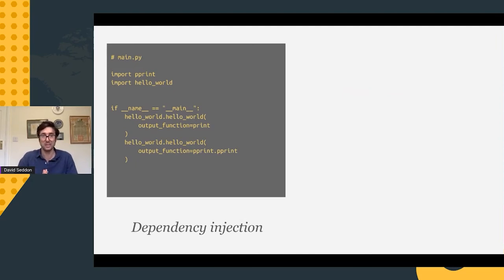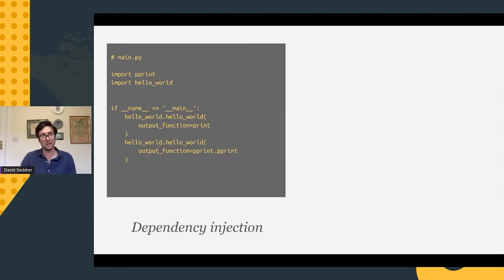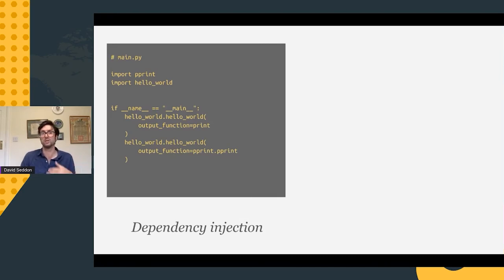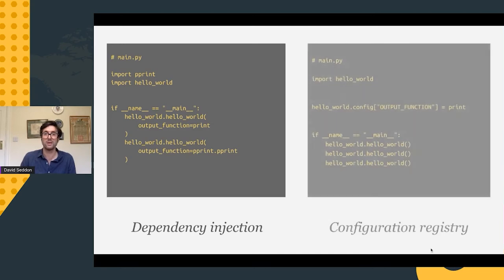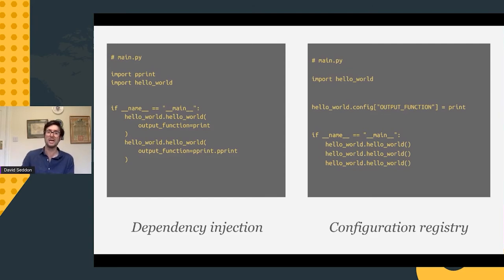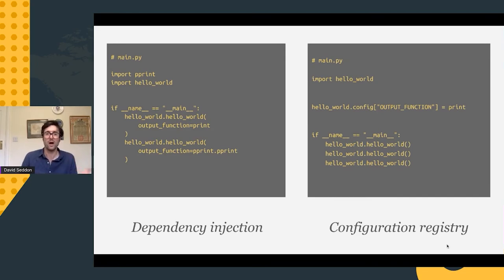Comparing the two: dependency injection is great if you want to vary dependencies — for example, passing print one time and pprint another time, since both support the same interface. You couldn't do this with a configuration registry because the registry should be immutable and not change at runtime. However, a configuration registry is better for fixed dependencies — if you're repeatedly calling hello_world, it's much cleaner not to keep passing in the print function each time.